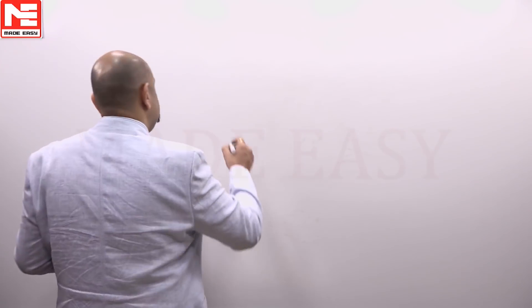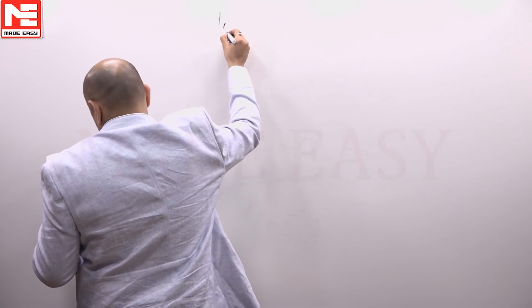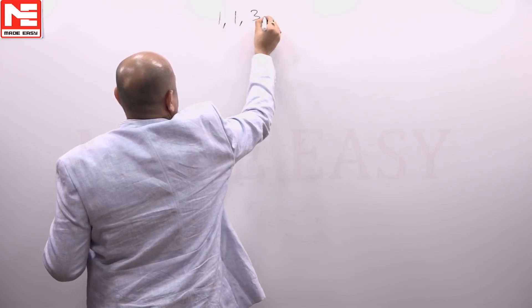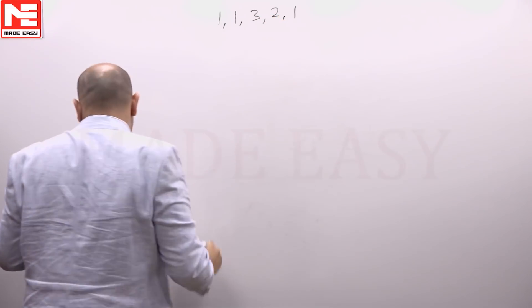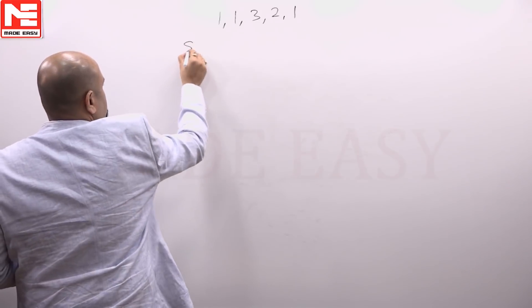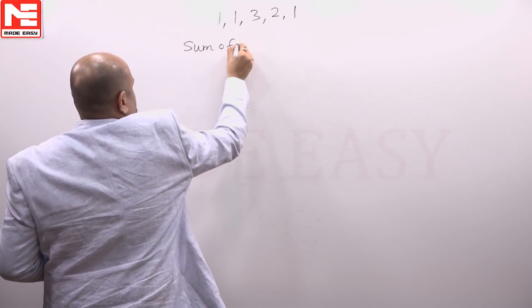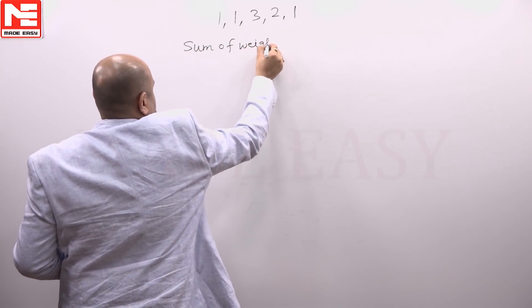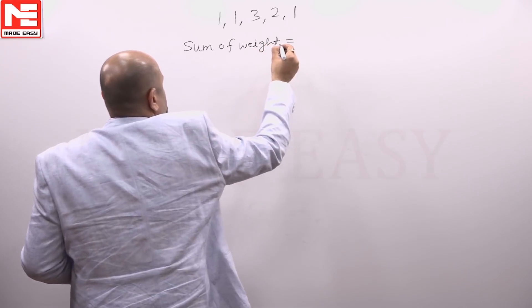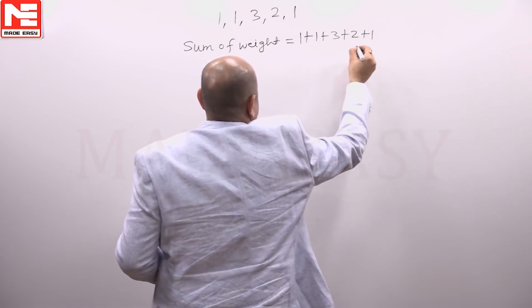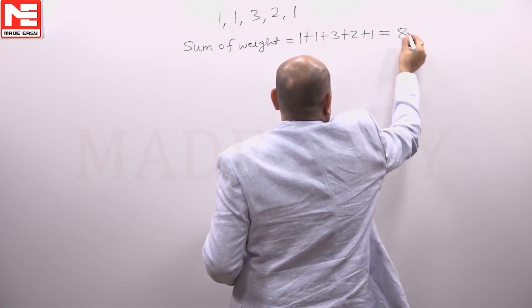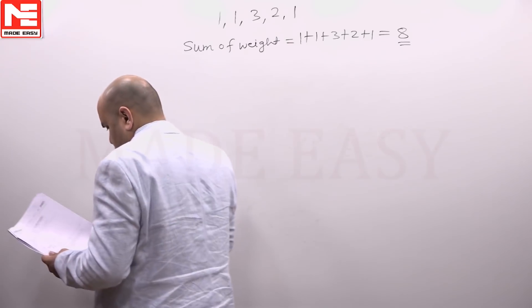Now first of all, the weights given are 1, 1, 3, 2, and 1. The sum of weights is 1 plus 1 plus 3 plus 2 plus 1, that is 8. That is the weight summation.